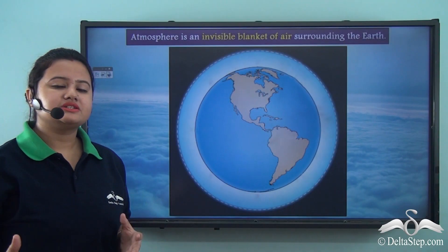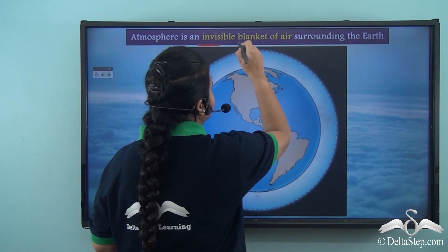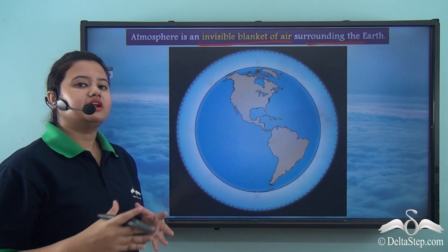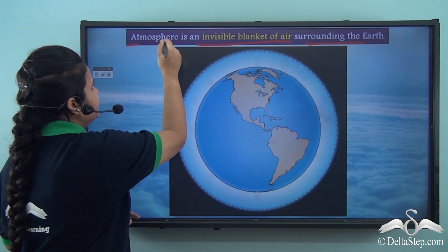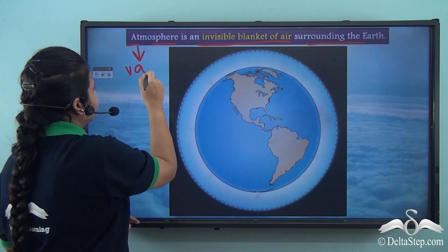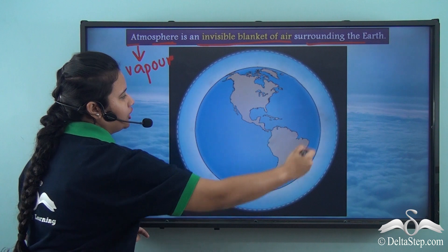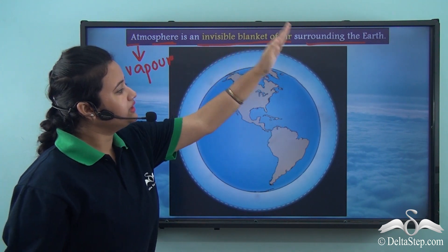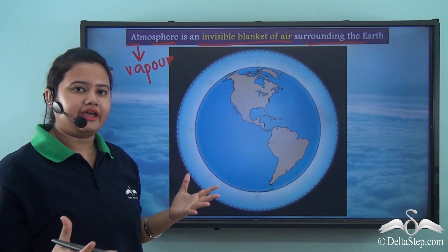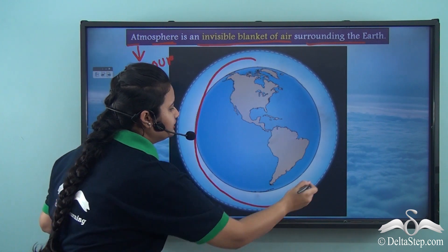Now let us know what atmosphere means. Atmosphere is an invisible blanket of air surrounding the Earth. The word atmosphere comes from two words: Atmos and Spear, where Atmos means vapor and Spear means ball. So atmosphere is an invisible blanket or sphere that is composed of vapor or air, and this invisible blanket surrounds our Earth.